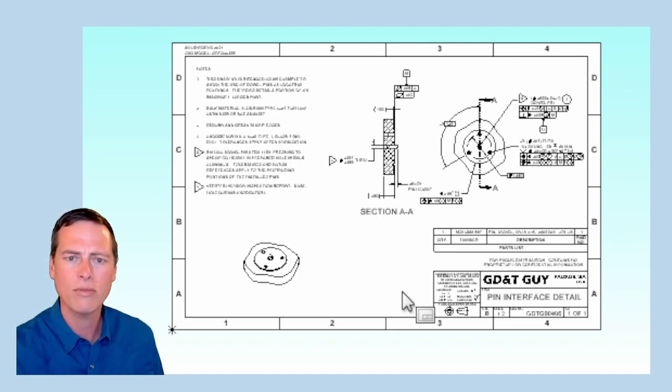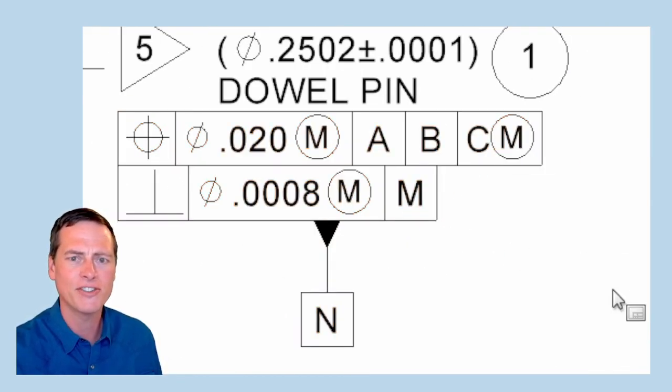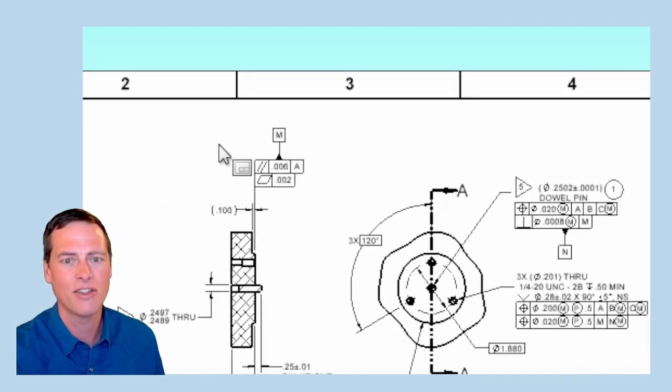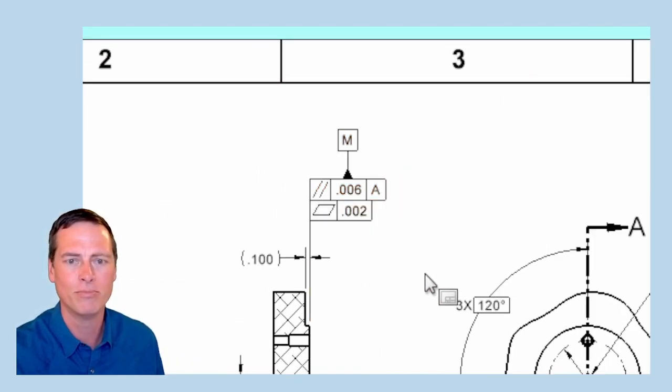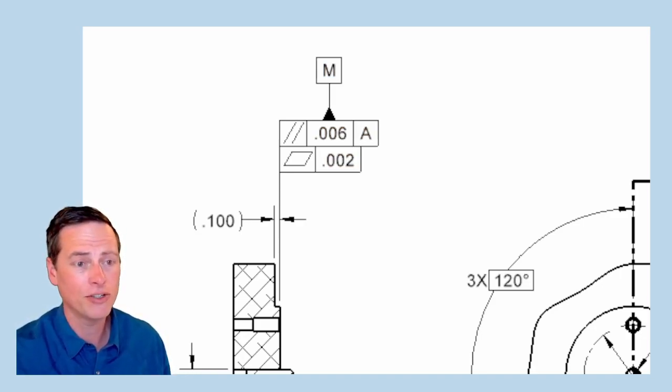We can't see it on this little detail, but the larger part has a datum reference frame A primary, B secondary, C tertiary at MMB. My money says that these are the locating features of the large part in the next assembly. So have a look at the flat surface of this interface that I'm calling datum feature M. If this were a full drawing of the part, I would expect a dimension somewhere that gives the distance and the tolerance from datum A. But we don't see it here. What we do see is a parallelism to datum A, which makes sense, and a flatness.